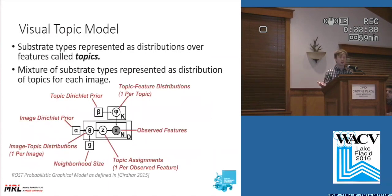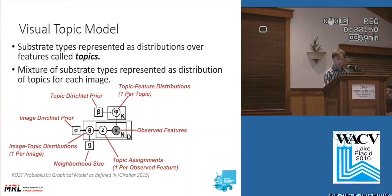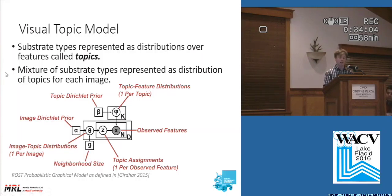The visual topic model represents substrate types as probability distributions over the features — we call those distributions topics. The model assumes that each image has a distribution over the topics, and it also assumes that each feature was generated by sampling first the image topic distribution and then the corresponding topic feature distribution. When we use the model, given the features, we estimate the image topic and topic feature distributions. We can do that without using any labeled training data, and it gives us a mixture of the substrate types in the image topic distributions when we've finished.